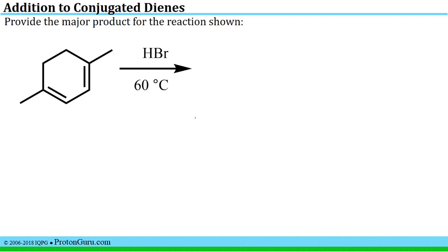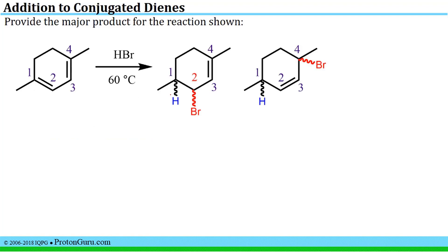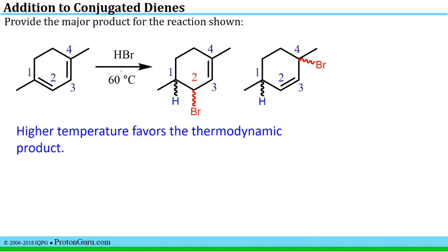Taking the same substrate and doing the reaction at an elevated temperature could lead to a different outcome. We have the same possible products, but now temperature favors the thermodynamic product — the more stable alkene. The 1,2 addition product has three substituents: it is a trisubstituted alkene. The 1,4 addition product has only two substituents off the alkene, making it disubstituted and less stable. So the 1,2 addition product is the more substituted, more stable alkene here and is the major product — interestingly, the same as the kinetic product in the previous example, illustrating that the thermodynamic product can coincide with the kinetic product.